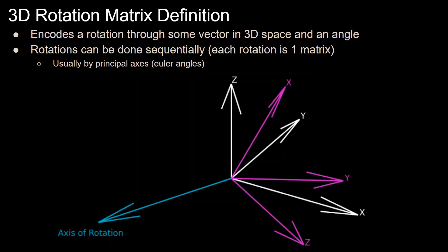And rotation matrices can be used in sequence to encode multiple rotations about multiple axes of rotation. These axes of rotation are usually the body frame principal axes, which are the x, y, and z axes, and which is how actually Euler angles are defined, as a sequence of rotations about the principal axes.